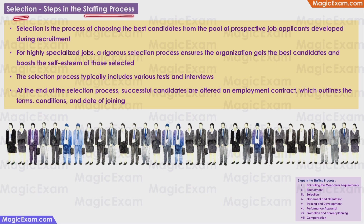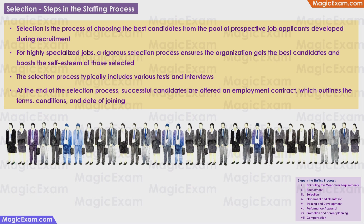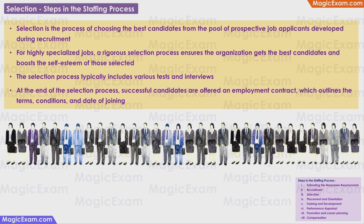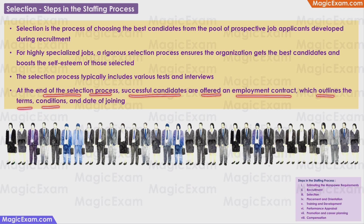Selection is the third step in the staffing process. It is the process of choosing the best candidates from the pool of prospective applicants developed during recruitment. For highly specialized jobs, a rigorous selection process ensures the organization gets the best candidates and also boosts the self-esteem of those selected. The selection process typically includes various assessments such as intelligence tests, aptitude tests, personality tests, and trade tests, as well as interviews. At the end, successful candidates are offered an employment contract outlining the terms, conditions, and date of joining.